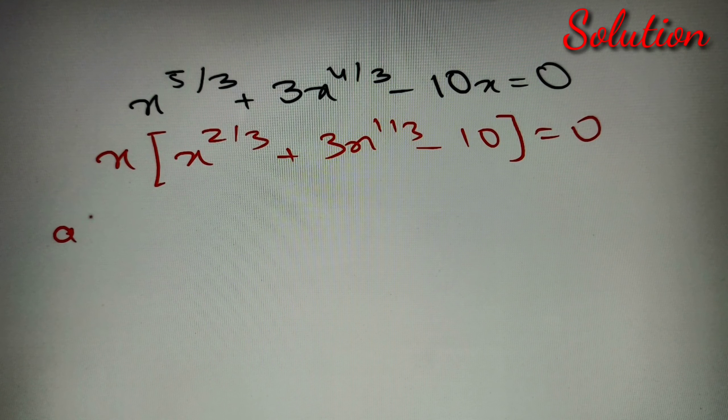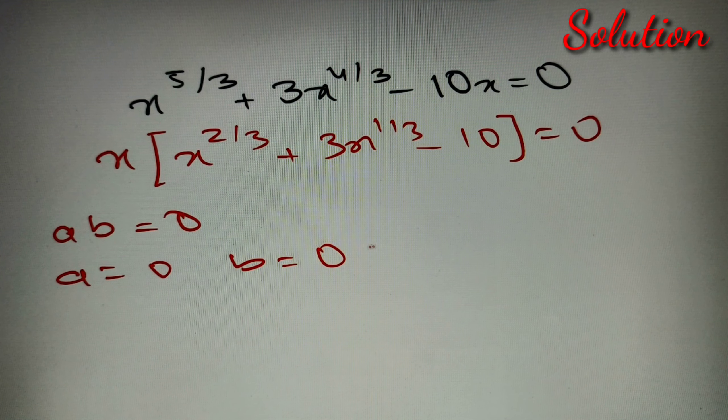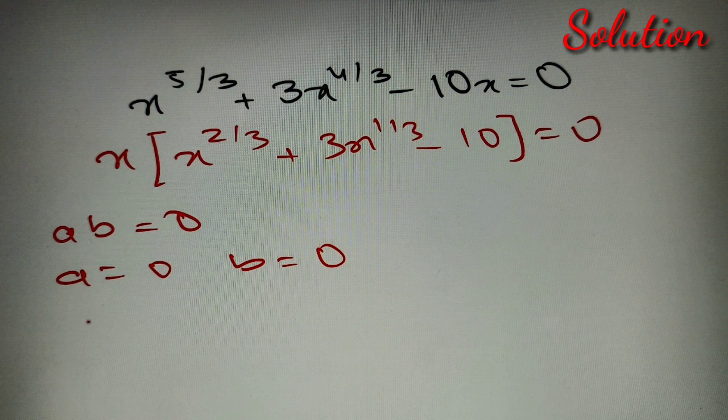Now we have an equation such that a×b = 0, and we know that in such cases either a = 0 or b = 0, or both a and b are equal to 0. So let's first take that a = 0, that is x = 0.